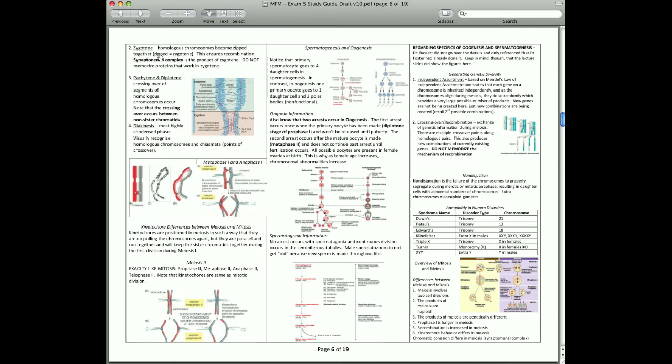Let's go to zygotene. Zygotene means that they're zipped together. You have two homologous chromosomes, which are pairs of sister chromatids that are going to be zipped together, and this synaptonemal complex means that synapsis is over, and it's ready for recombination.